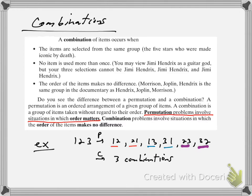So if you take a look here, in a combination, no item is used more than once, and the order of the items makes no difference. Those are the two big things we just talked about. Let's do a couple examples to illustrate how you tell the difference between these in an actual problem.